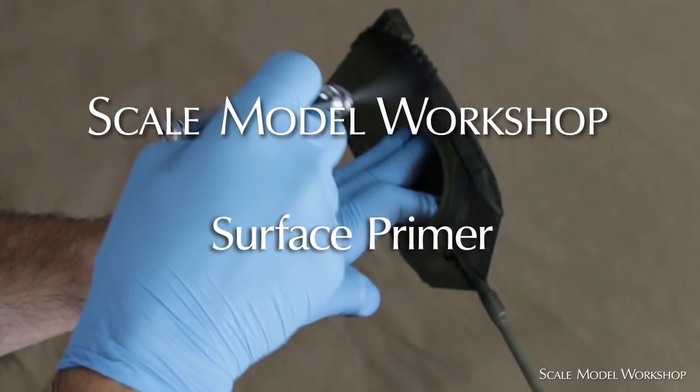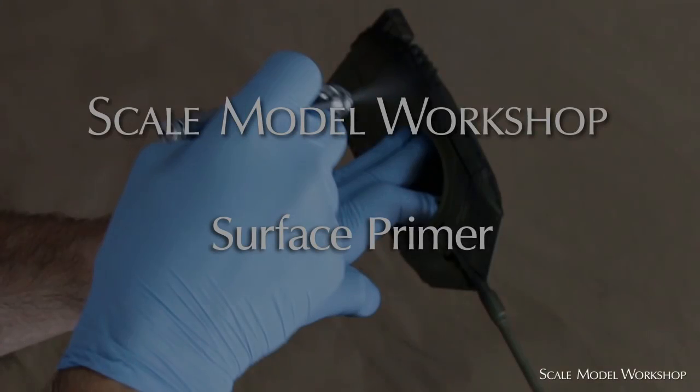I explain how to achieve a smooth application of material in video 13 on surface primer. Since this initial painted surface is much smoother, it only takes a few passes with a scuff pad or ultrafine sanding sponge to achieve a super smooth surface.